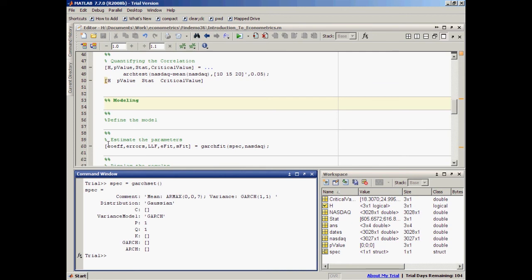So, let's see what will happen if I just call this function without any input arguments. Okay, a model is created called spec, and I can see that it's the default model. So, the default model is an ARMAX(0,0), or doesn't have an X, so it's ARMA(0,0). Basically, it's saying that the returns is equal to a constant plus innovations, and variance is a GARCH(1,1) function by default.